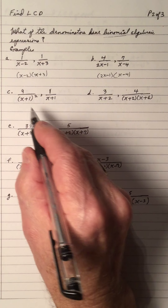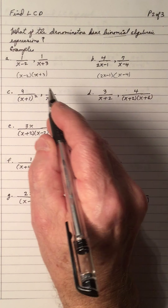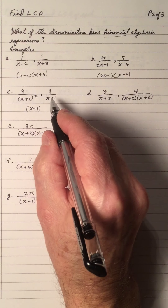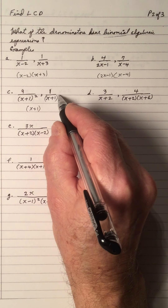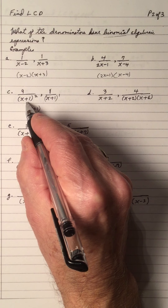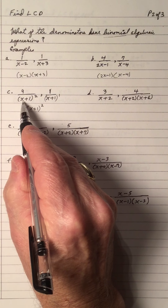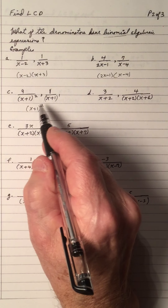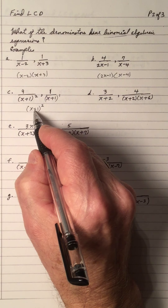Example C: this denominator is (x plus 1) squared, and this denominator is (x plus 1). The denominator has (x plus 1) as a factor with exponent 1, and the other has exponent 2. The common factor in both denominators is (x plus 1), and the highest exponent is 2. So the LCD is (x plus 1) squared. This means both denominators are contained in this LCD.